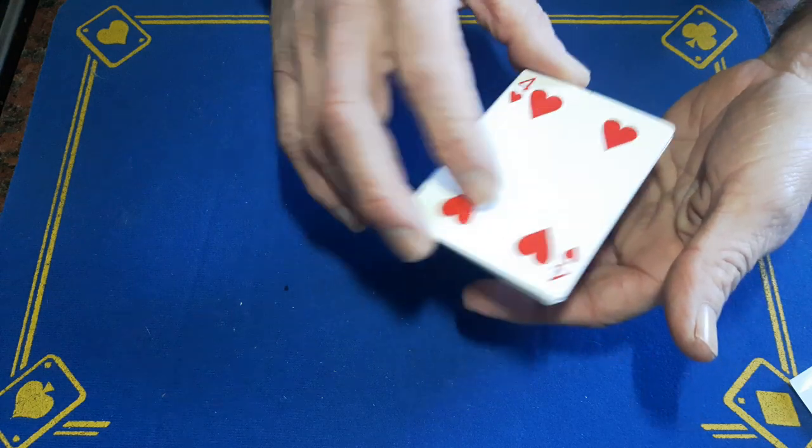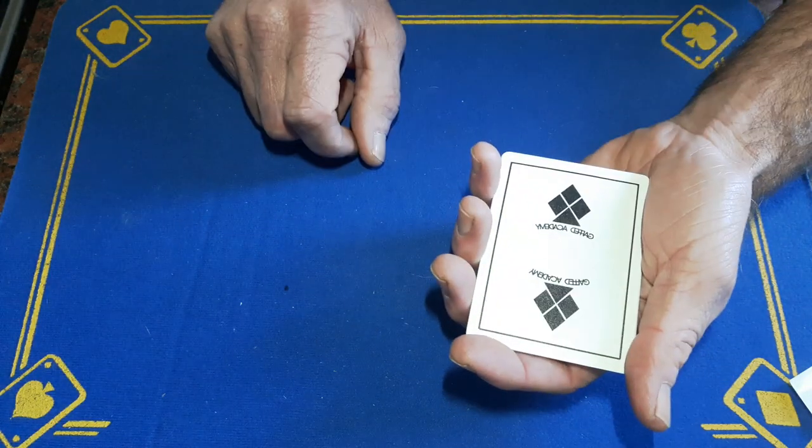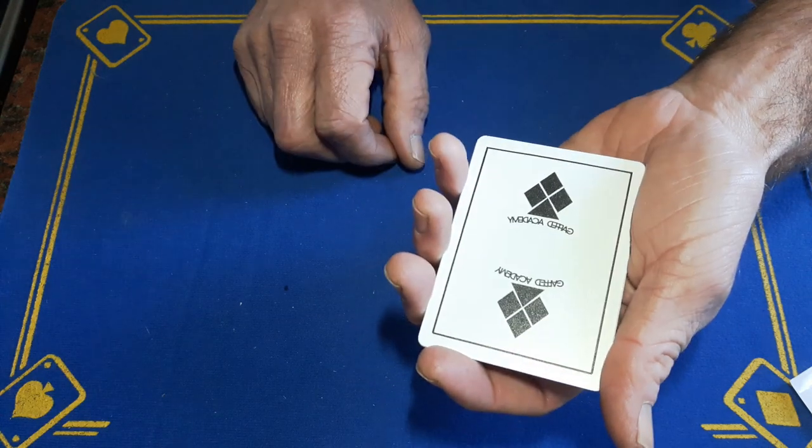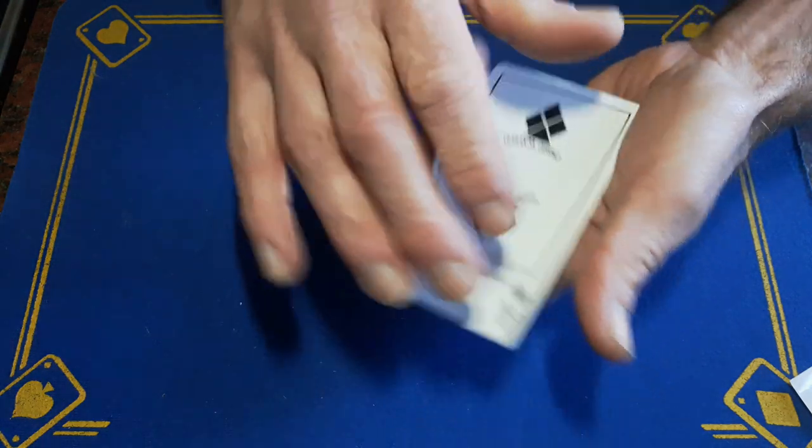We're going to give it a little magical wave and the deck turns to the Gaffed Academy original playing cards, first edition, brilliant. But your card, or the ace, is still in the middle.